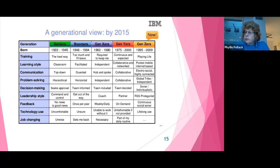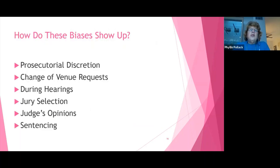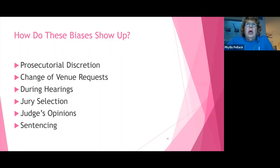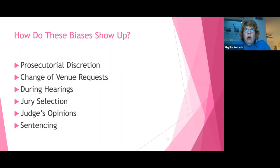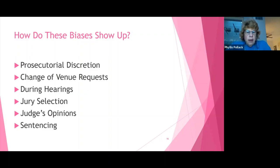How do these biases show up? Well, first of all, they show up in prosecution discretion. Over the last eight or ten months, we have had loads of examples of unarmed Black individuals being killed by the police — and sometimes the police officers are prosecuted and sometimes they are not.